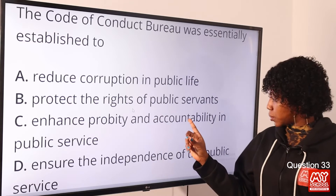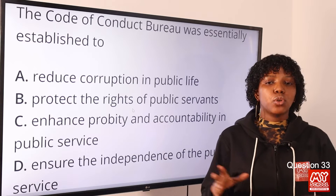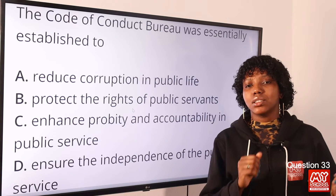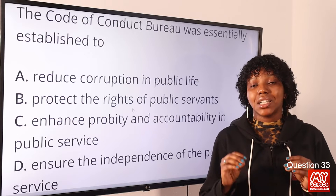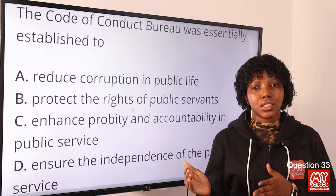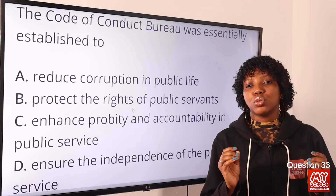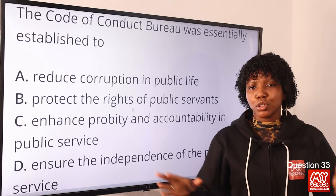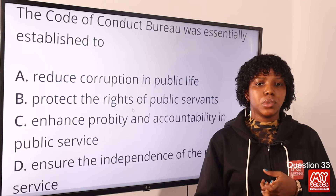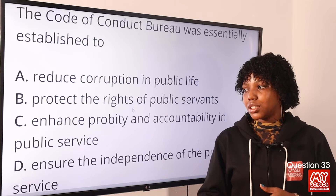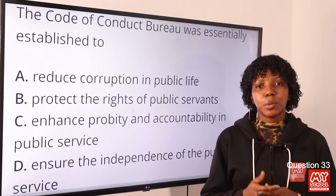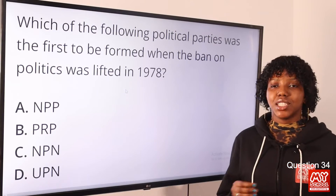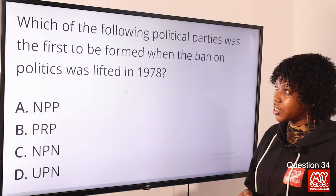Question 33: The Code of Conduct Bureau was essentially established to — the answer is option C: enhance probity and accountability in public service. The Code of Conduct Bureau was established in 1979 during the second republic. Its mandate is to maintain a high standard of public morality. Its motto is honesty, transparency, and accountability in public office. Probity means honesty.